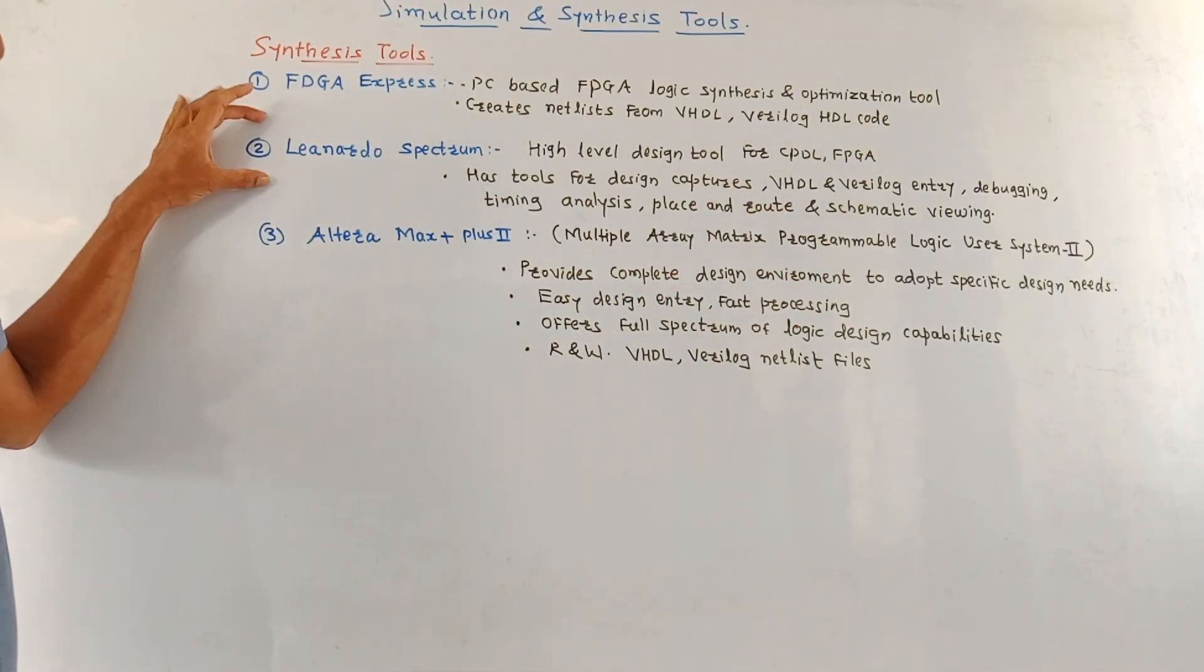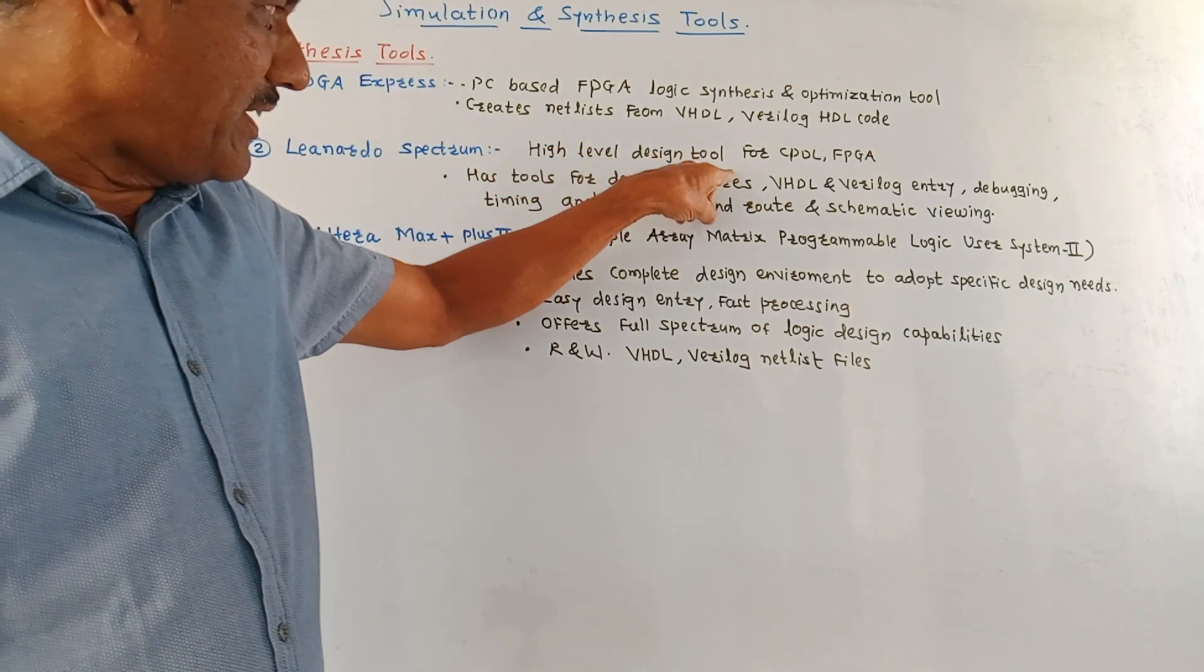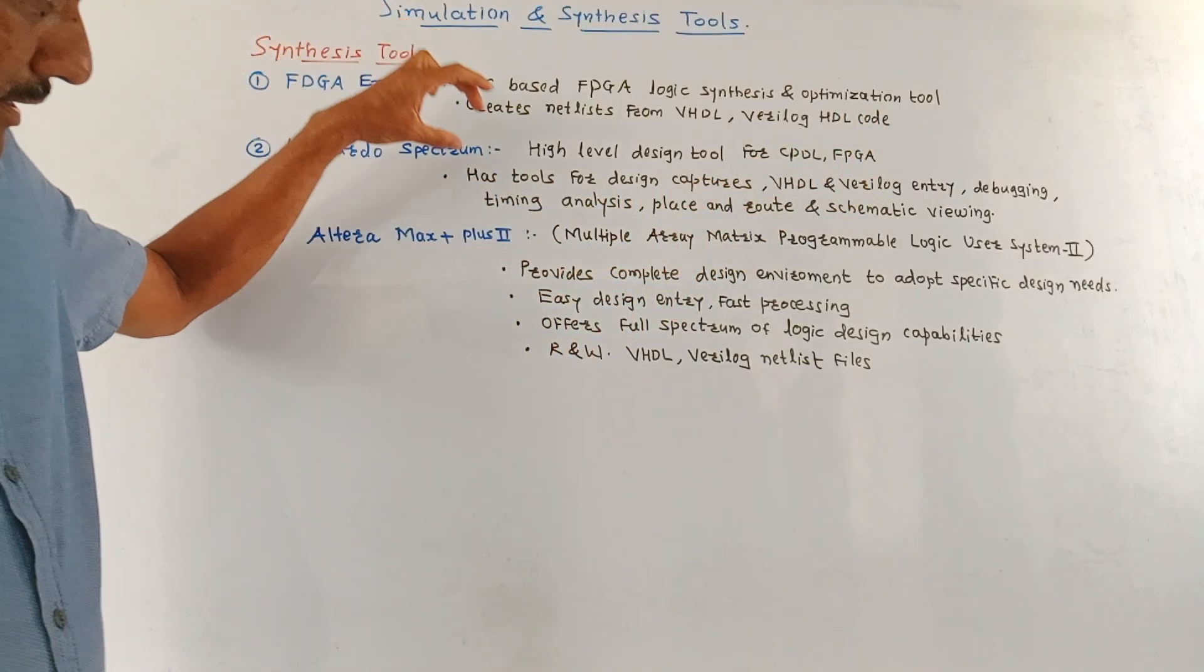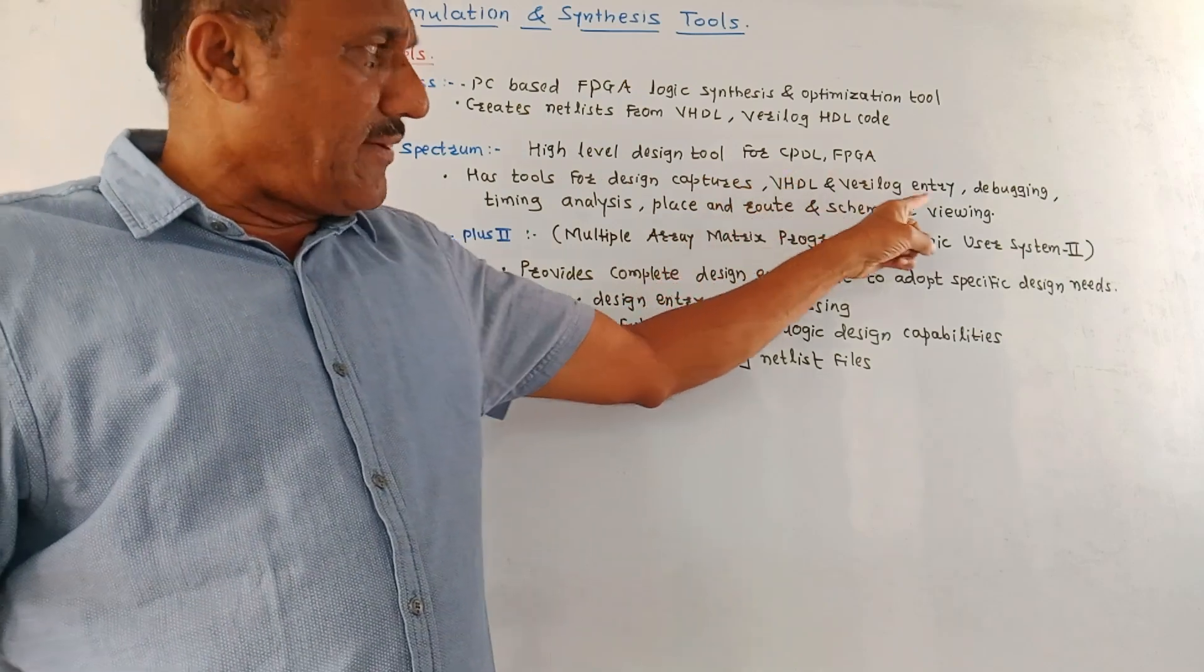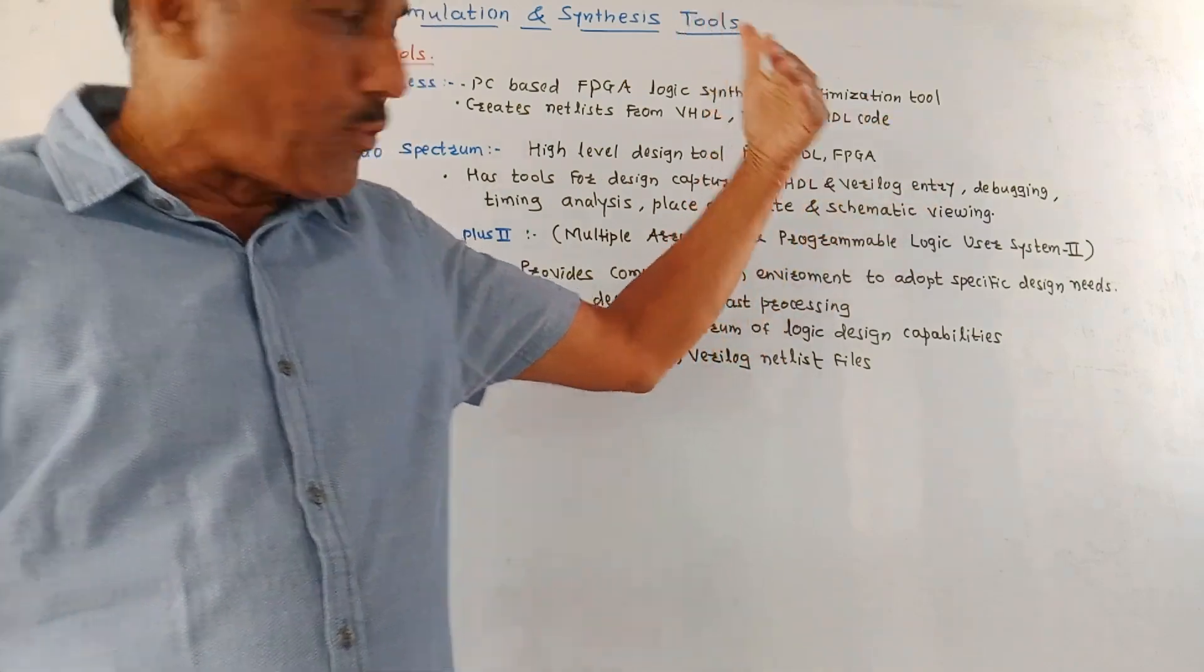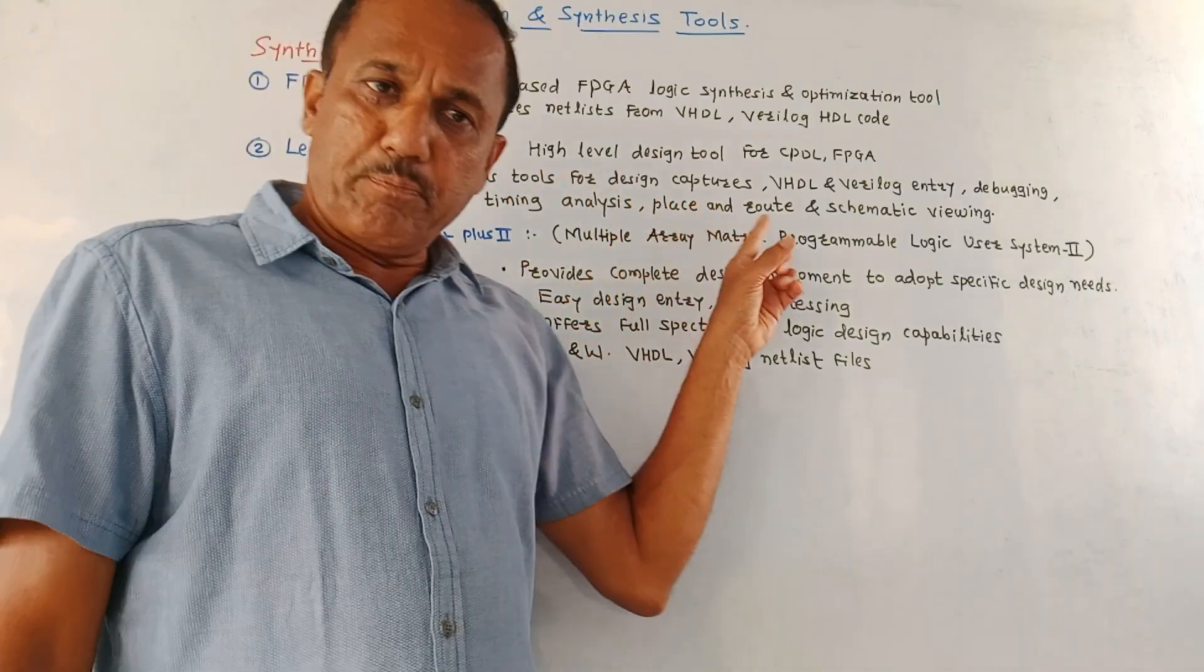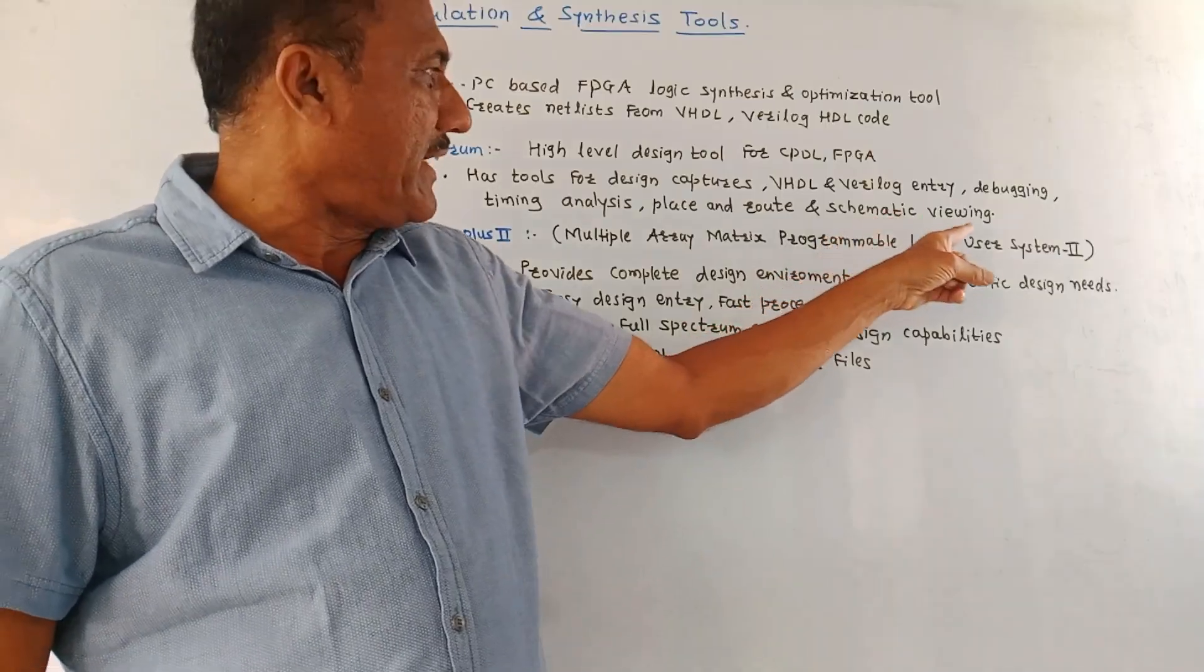Second is Leonardo Spectrum. It is high level design tool for CPLD and FPGA. And it has some certain tools which can capture VHDL and Verilog entries. Then it is useful for debugging operation, then for timing analysis. Then it places and routes and it is also used for schematic viewing.